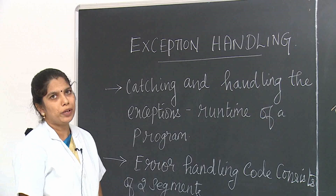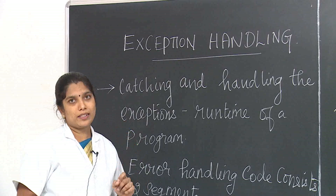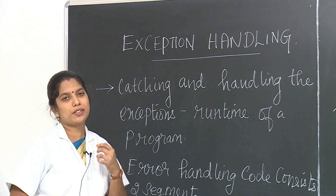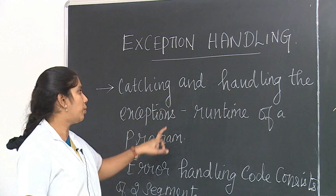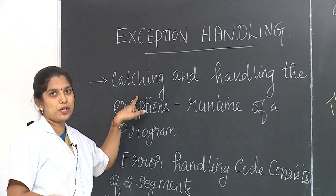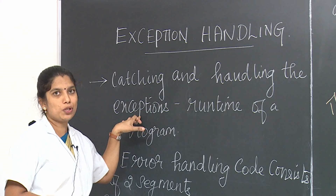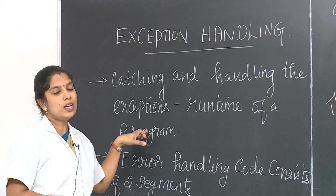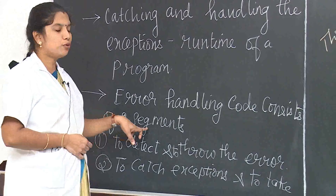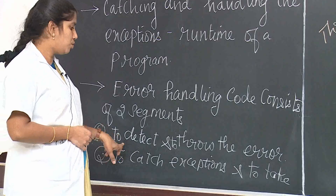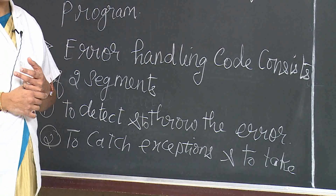An important topic in exception handling is the exception handling mechanism, which is used to rectify exceptions in programming. Exception handling is the process of detecting and handling exceptions during runtime of the program. It consists of two segments: one is to detect and throw an error, and another is to catch the exception and take appropriate actions.